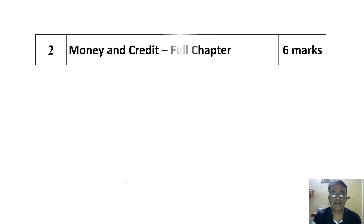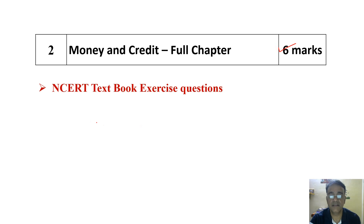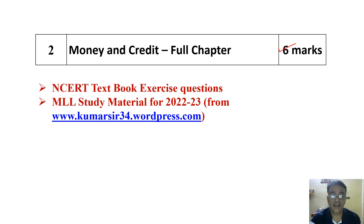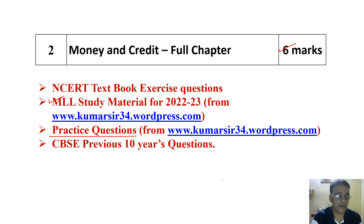Next, the students have to complete Money and Credit. Economics part is very easy; the students are very fast. This is why I have kept the economics chapters first. Money and Credit will cover around six marks, and students have to complete NCERT textbook exercise questions, the chapter from my minimum level study material, CBSE practice questions, and CBSE 10 years questions. Practice questions will be made available chapter by chapter on my blog by next week.